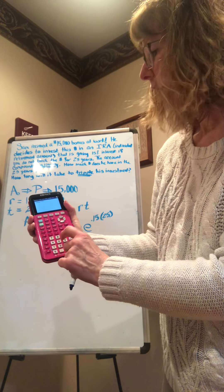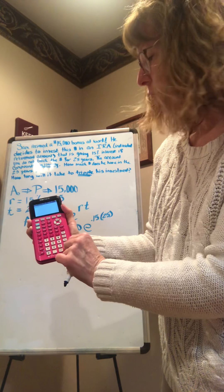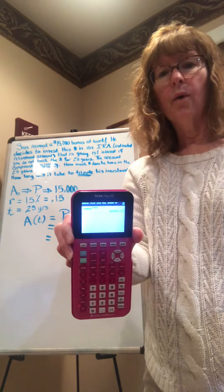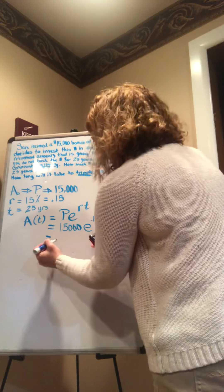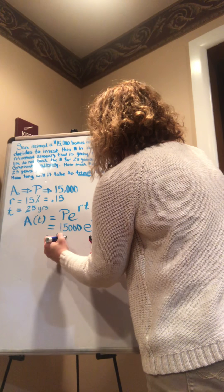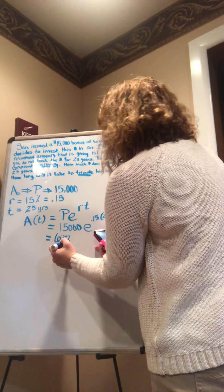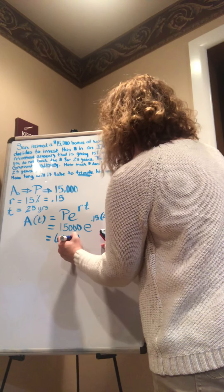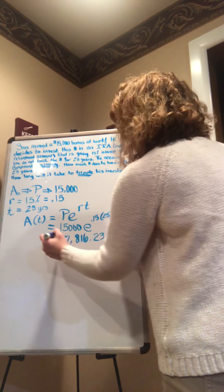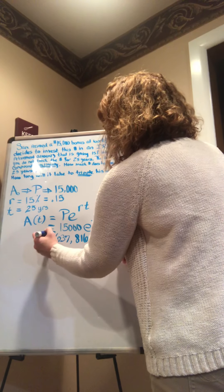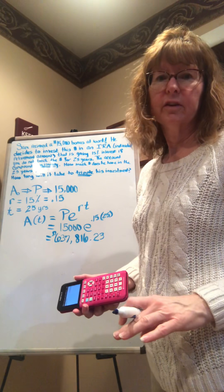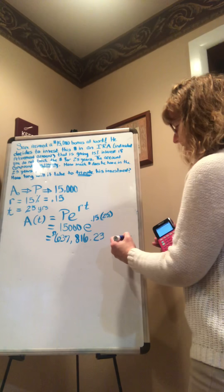When you do a problem like this, the first thing you do, as I said in class, is always write out what you have. You have your initial amount, which is also the principal, which is $15,000. The rate is 15%, which is 0.15. The time is 25 years for the first part.